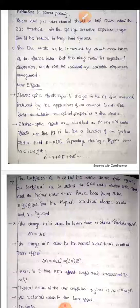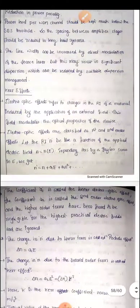Electro-optic effects refer to changes in the refractive index of a material induced by the application of an external electric field, which modulates the optical properties of the device. The Kerr effect is a type of electro-optic effect. Electro-optic effects are classified as first order and second order effects.